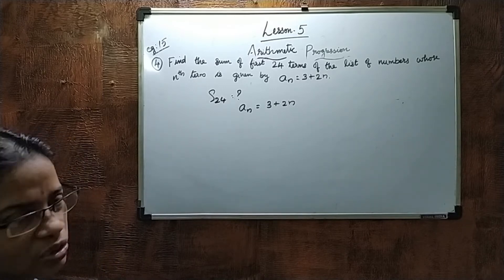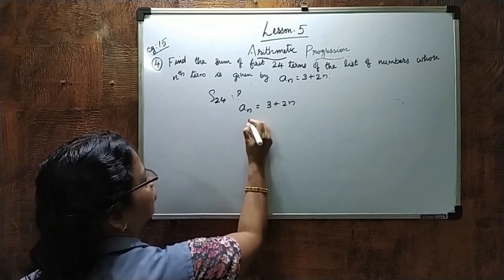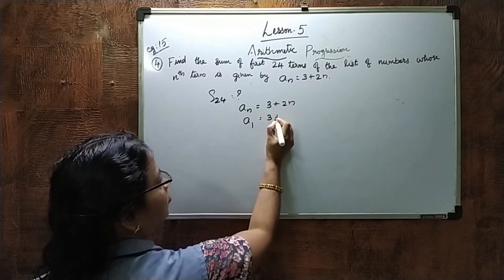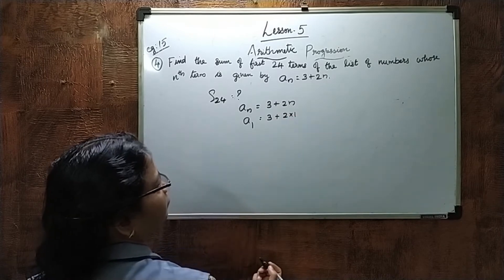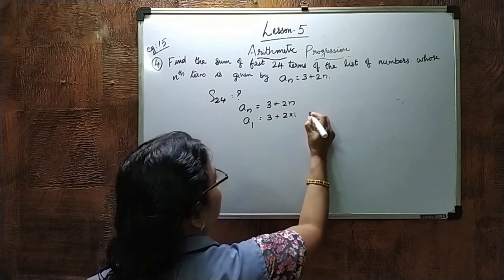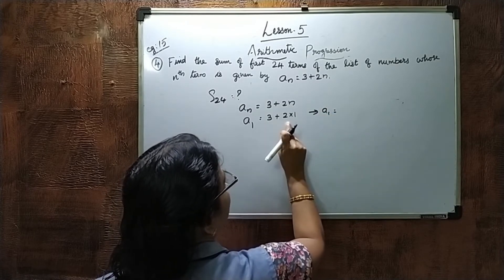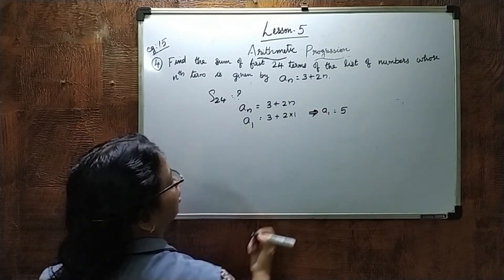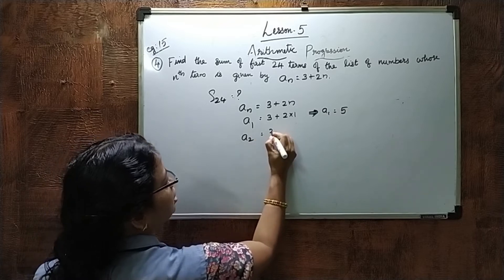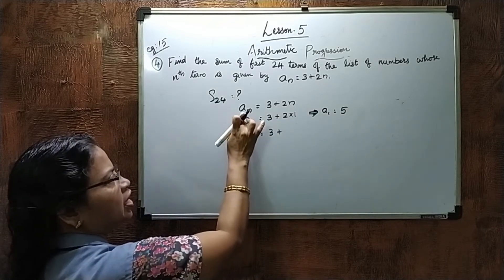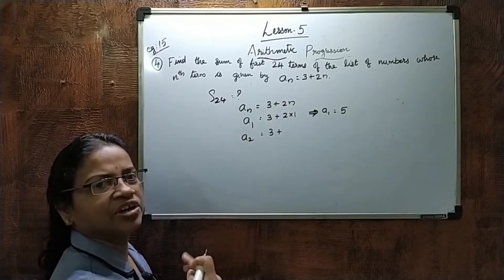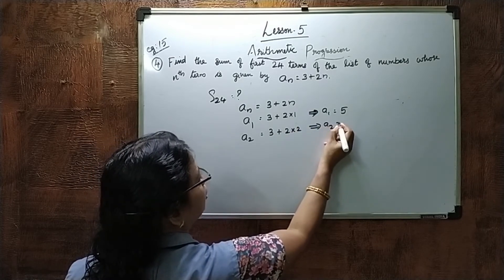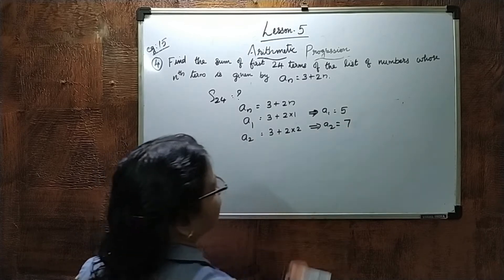First we find A. A1 means substituting N equals 1: A1 equals 3 plus 2 into 1, which is 5. Then A2 equals 3 plus 2 into 2, which is 3 plus 4, equals 7.